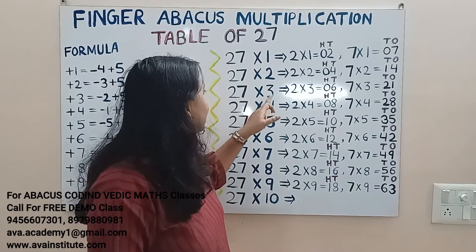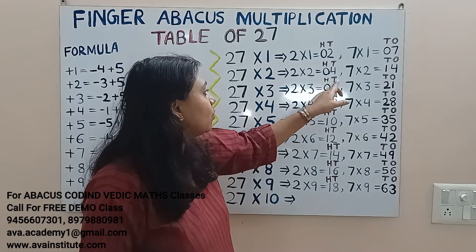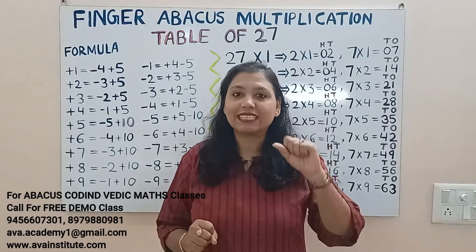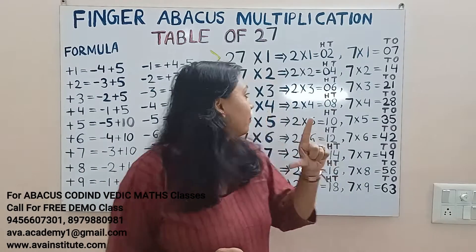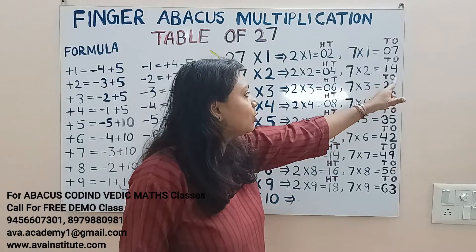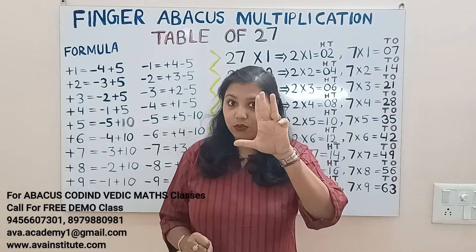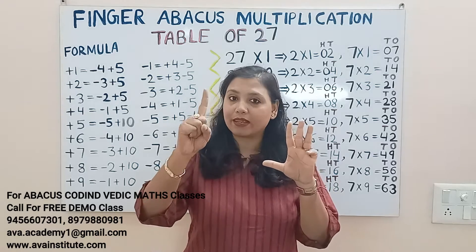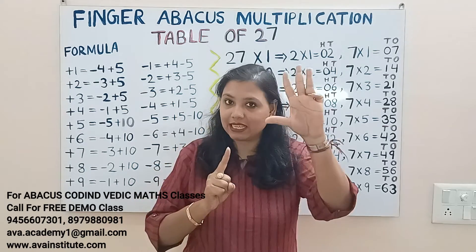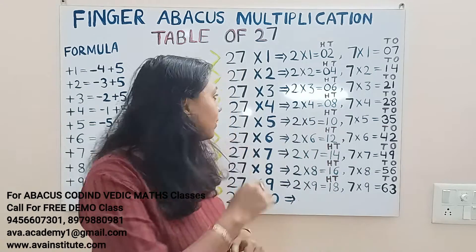27 threes: 2 threes are 6 — in hundreds 0, in tens 6. 7 threes are 21 — in tens 20, 2 fingers open, and in ones 1. The answer is 50, 60, 70, 80, 81. 81 is the answer.